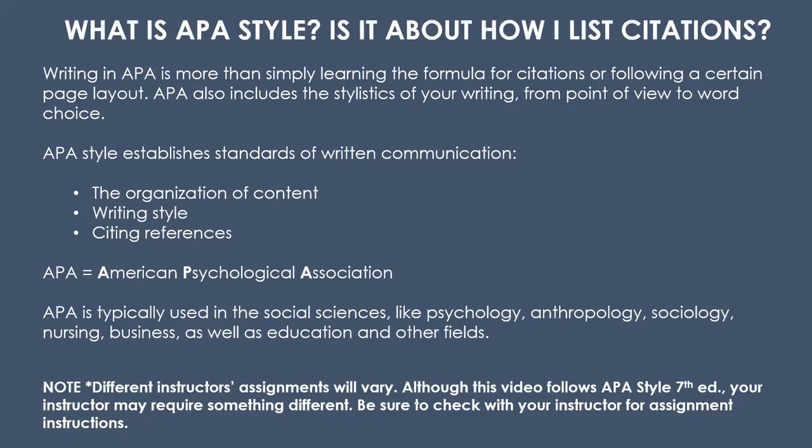Now that we remember what citing is and why we do it, let's talk about APA style. APA stands for American Psychological Association. We typically use APA in social sciences such as psychology, sociology, nursing, and business. One mistake often made is to think that APA is merely a way to cite sources. APA actually covers the stylistics of your writing from point of view to word choice. It's also about the organization of content.